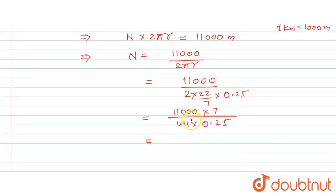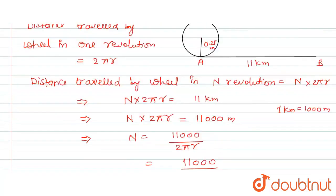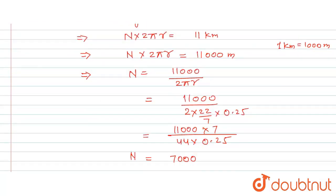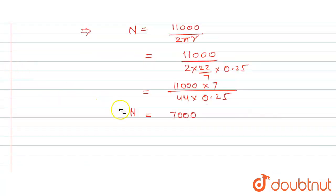will be 7,000, okay? So N will be 7,000. Now we will check the option. So here the option that is option D matches with our answer. Hence we can say that the final answer, option D, is correct.